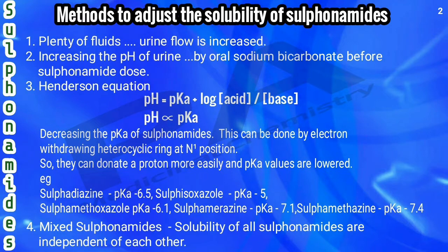The third method is to decrease the pH of the sulfonamide. For that, we use the Henderson-Hasselbalch equation: pH = pKa + log(concentration of acid / concentration of base). From this, pH is directly proportional to pKa. So if pKa is increased, pH increases; if pKa is decreased, pH decreases. Therefore, to decrease the pH of sulfonamides, we have to decrease their pKa.